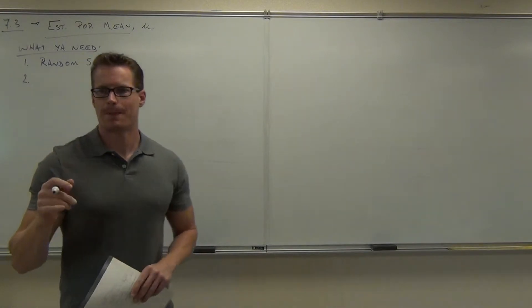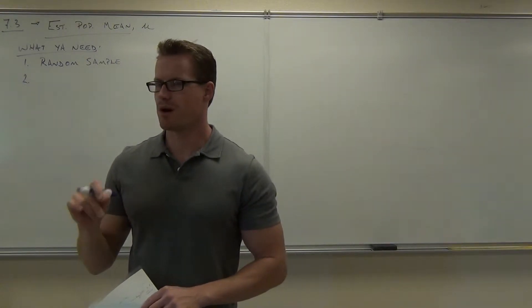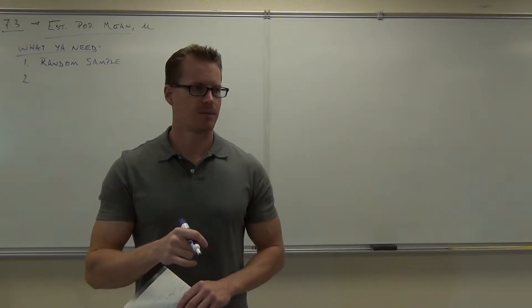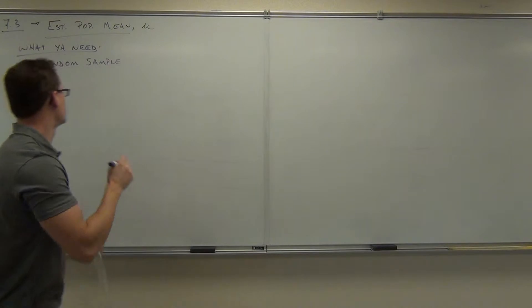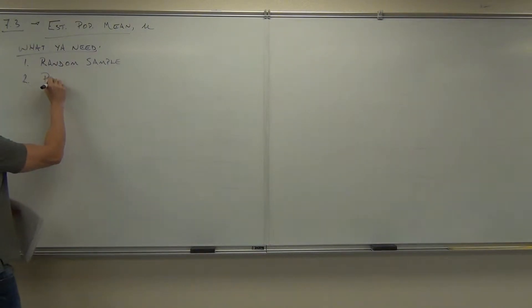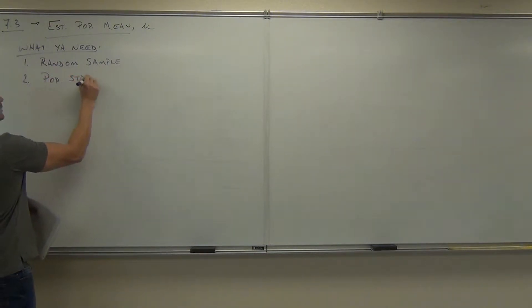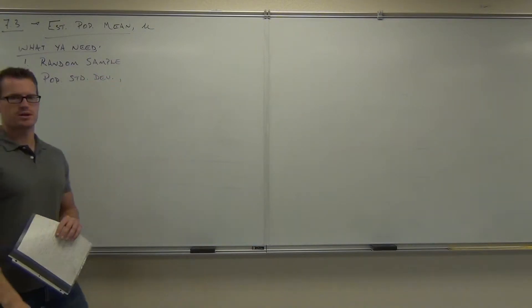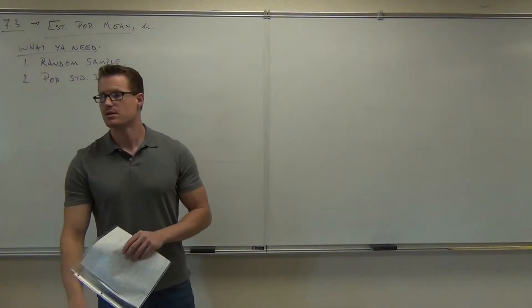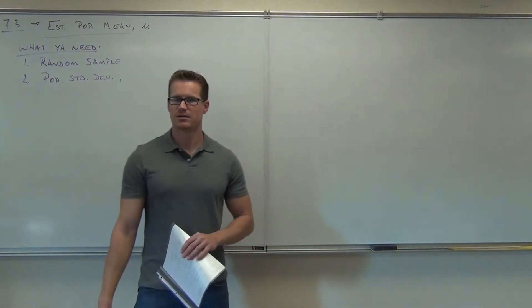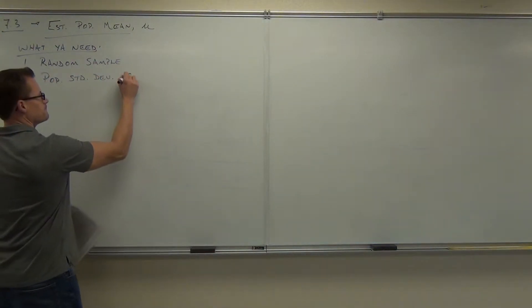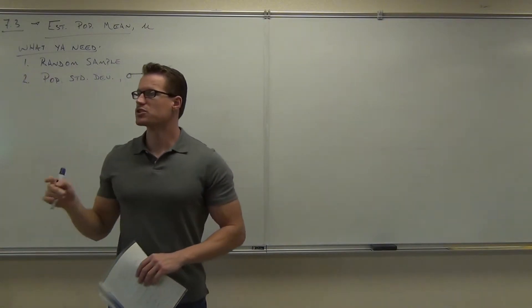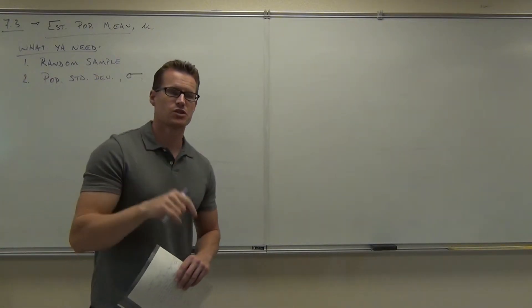Number two — do you remember the symbol for the population standard deviation? The symbol for population standard deviation is sigma. It looks like a lowercase 'o'. So the population standard deviation, sigma, is assumed to be...